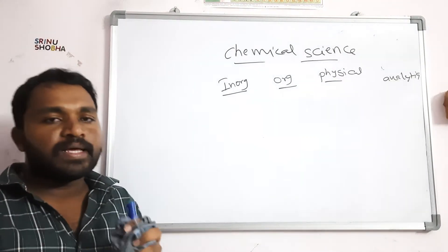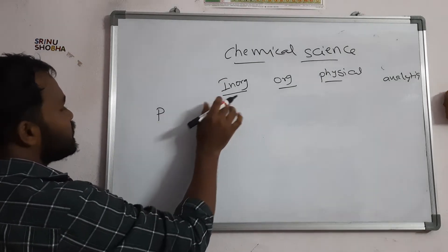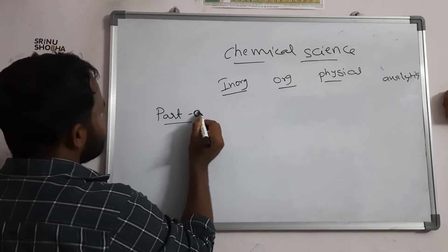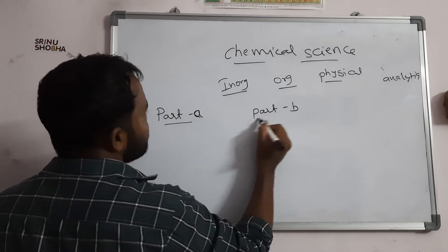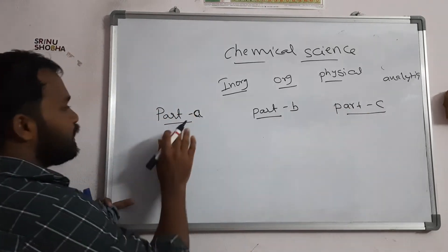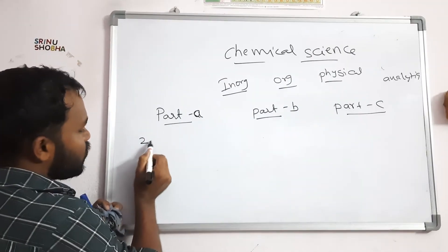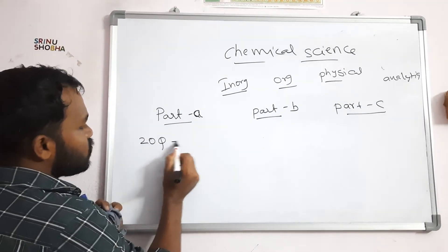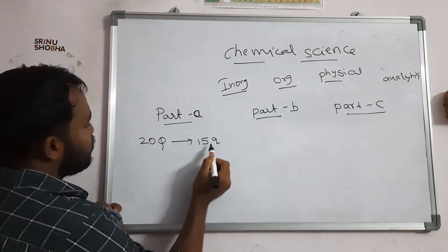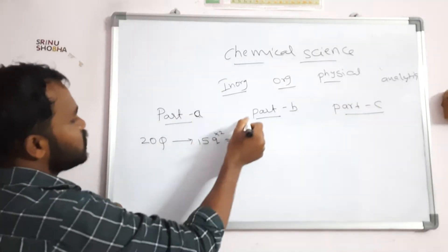First, I am going to explain the examination pattern. In this examination, we have three parts: Part A, Part B, and Part C. In Part A, there are 20 general aptitude questions. We have to attempt only 15 questions. 15 into 2 marks equals 30 marks total. 5 questions are optional.